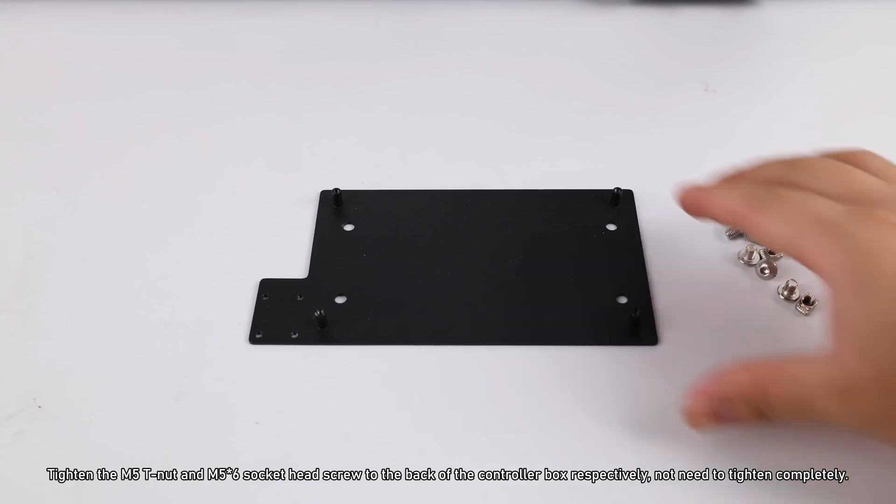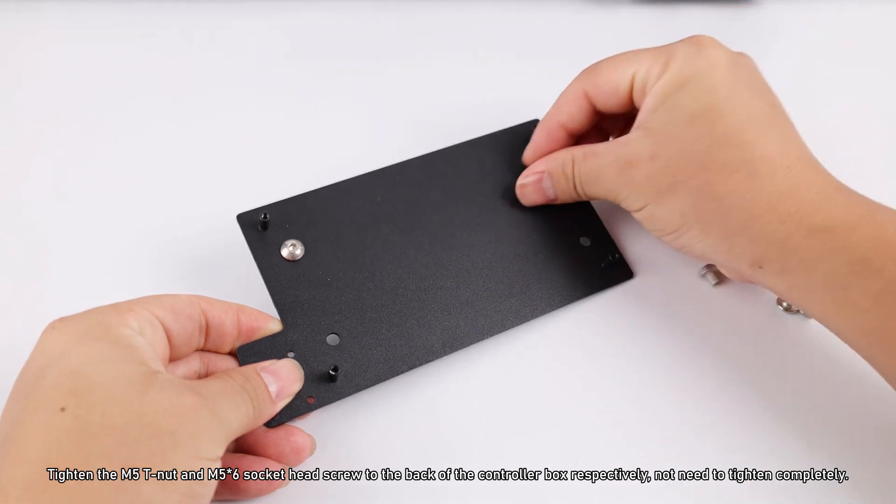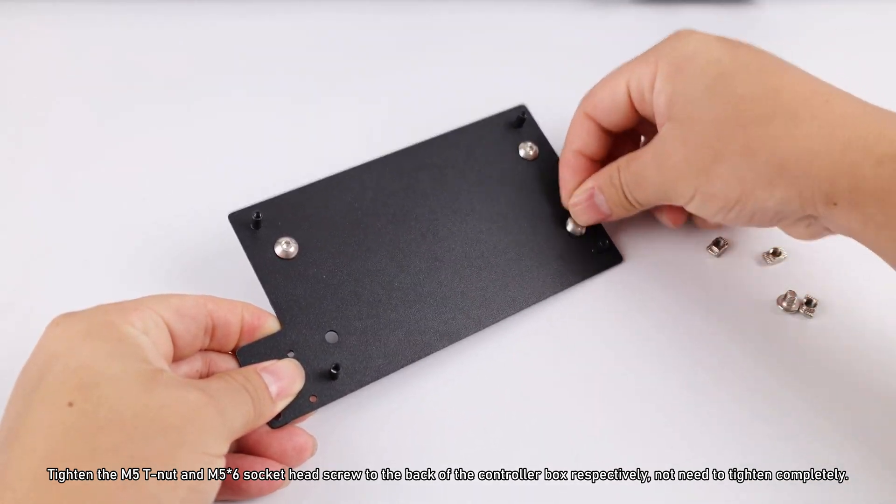Tighten the M5 T-nut and M5×6 socket head screw to the back of the controller box respectively, do not need to tighten completely.